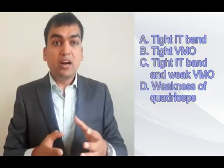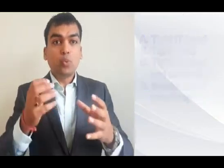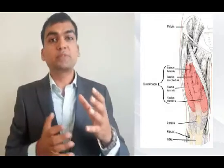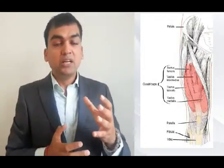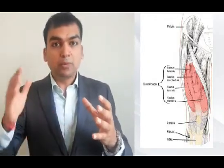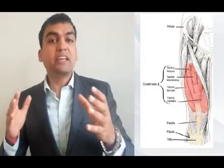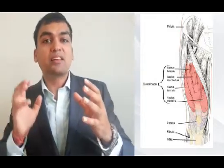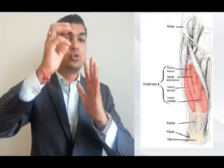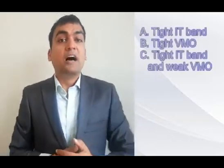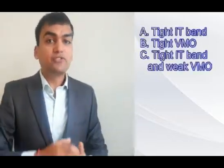So the quadriceps actually work a lot with patellar tracking, but whenever the whole quadriceps is weak, the tracking becomes pathomechanical but not toward lateral gliding. It might put the patella in the superior surface, toward patella alta or patella baja, but not the lateral excessive glide. So we can take out the fourth option.